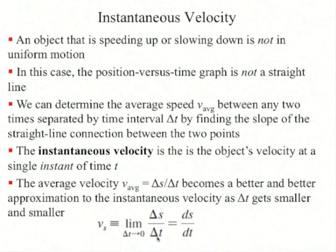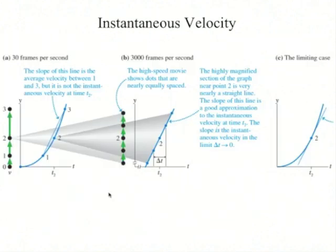This is called the limit of delta s over delta t as delta t approaches zero, which is ds/dt. Here are the motion diagrams and position graphs of an accelerating rocket. The position versus time graph is curved, and the slope of the line connecting points one and three is the average velocity between those times, but it's not the same as the instantaneous velocity at time t2. If we zoom in around time t2, the graph is nearly a straight line, and the slope of this line is a good approximation to the instantaneous velocity at t2. The instantaneous velocity at t2 is the slope of the line tangent to the graph at that point.